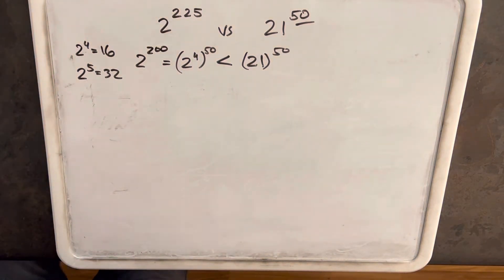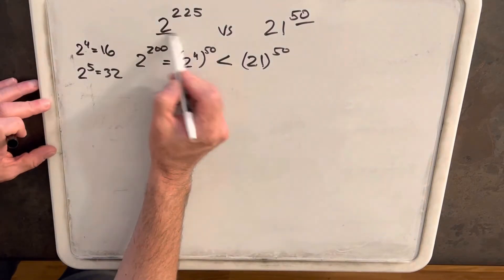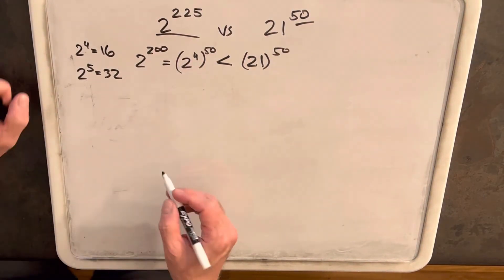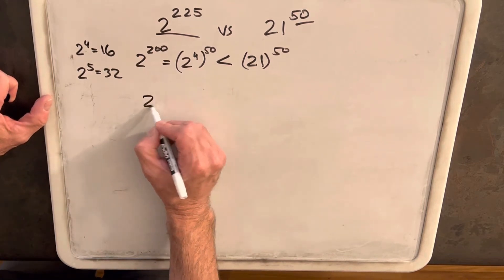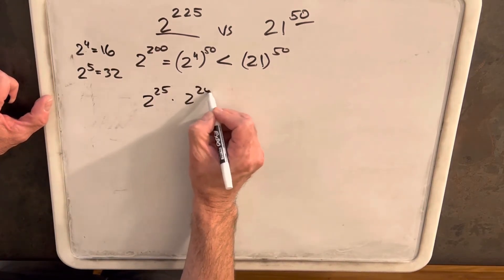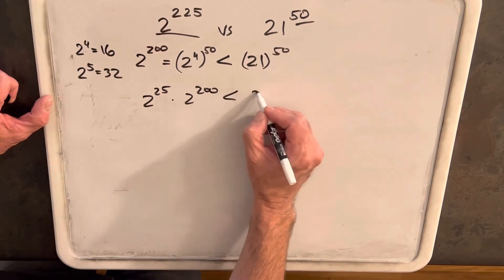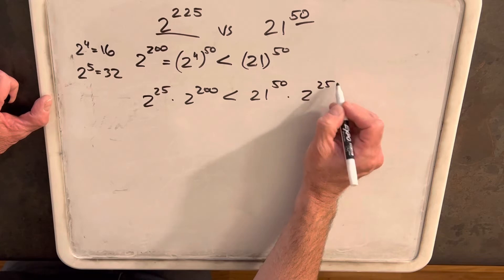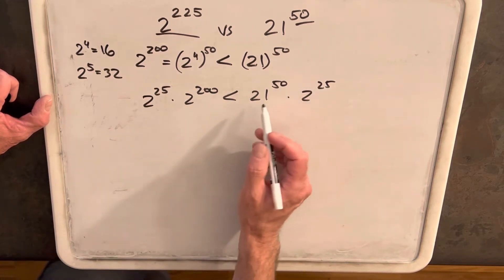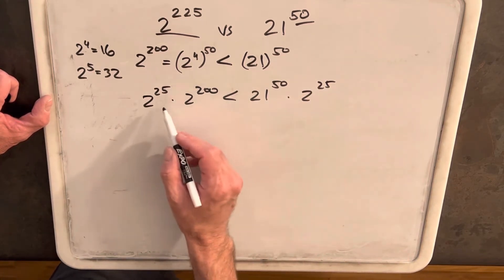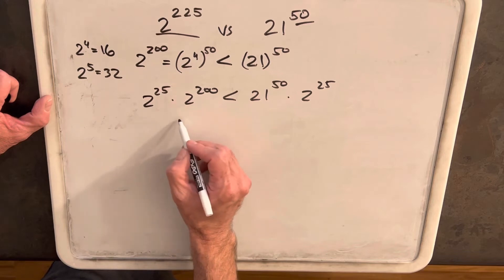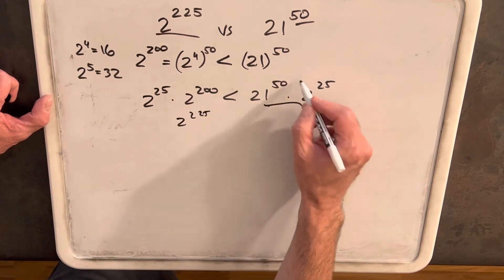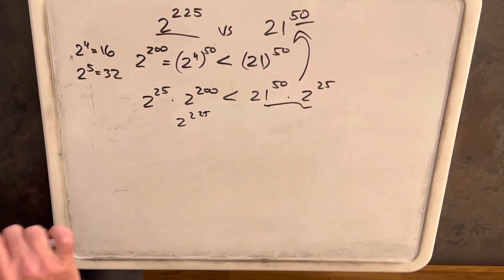But that doesn't really work because we want to compare it at 2 to the 225th. Now we could multiply 2 to the 25th on both sides of this, but that's not really going to get us anywhere because then it's hard to know. Now we've got our 2 to the 225th on this side, but we don't know how to equate this with this. So I think we're going to bail on that first approach.